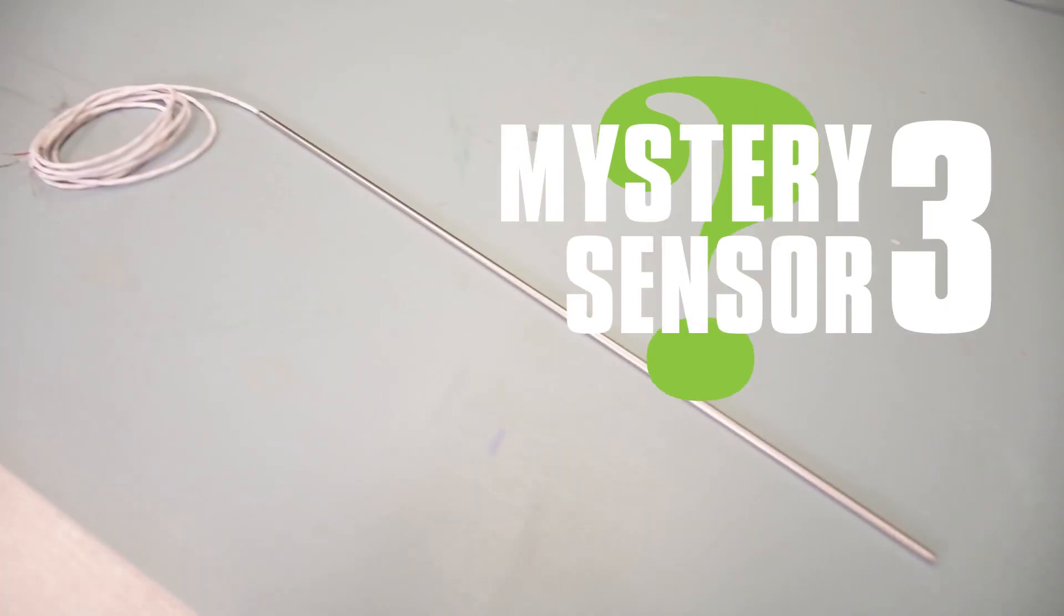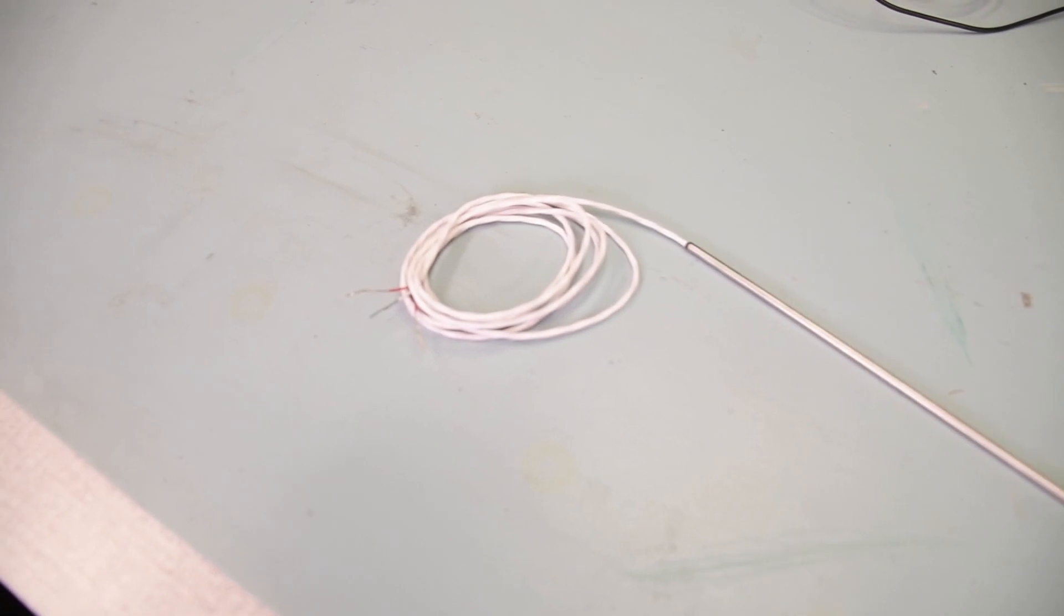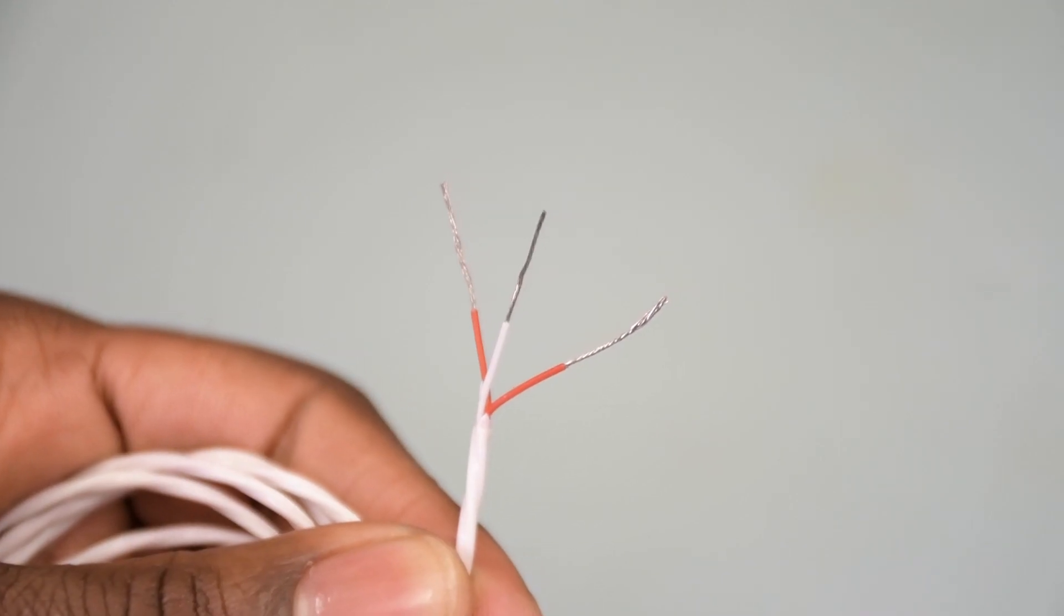Now, onto mystery sensor number three. This probe has a metallic sheath, no transition joint, but it does have a cable on the end, and has a three-wire construction.